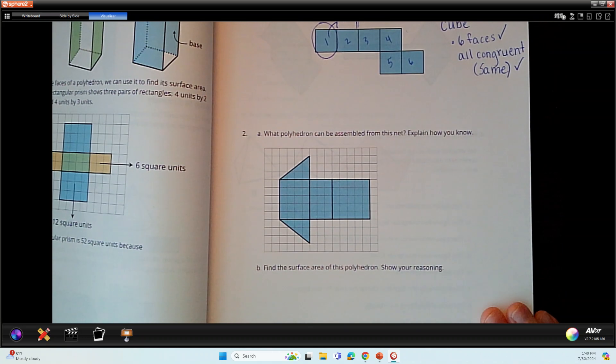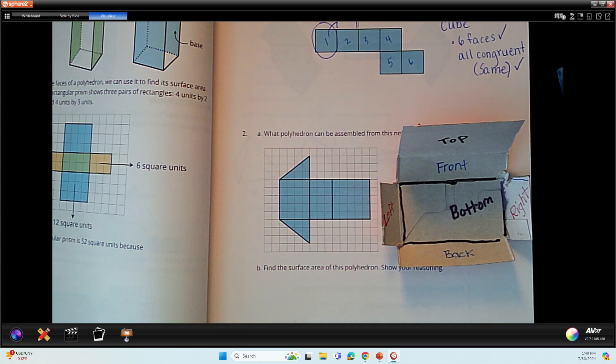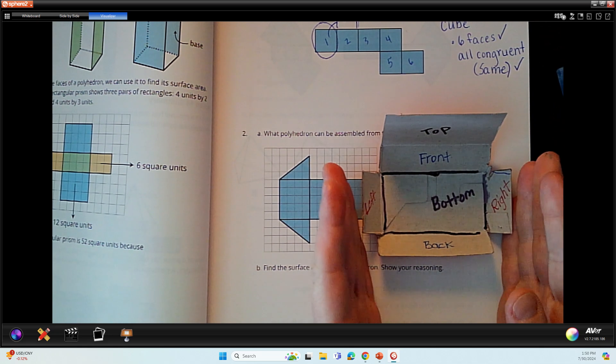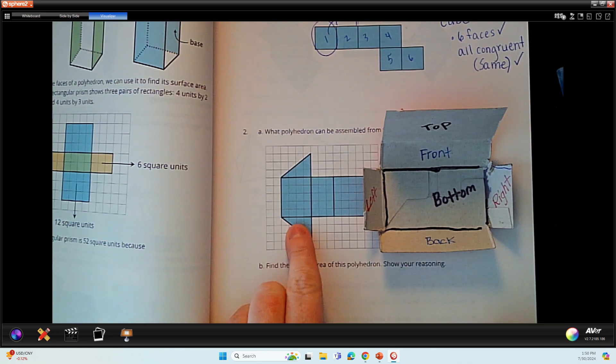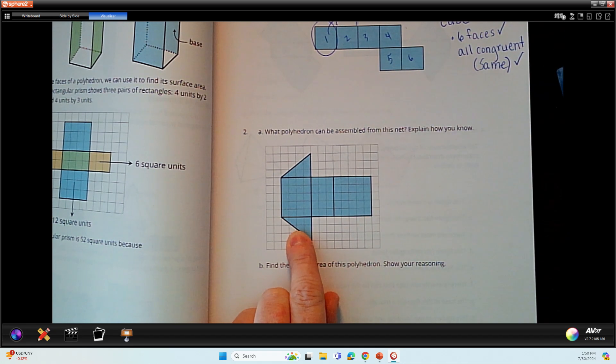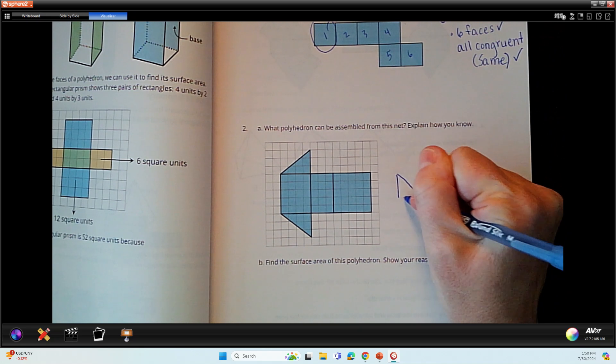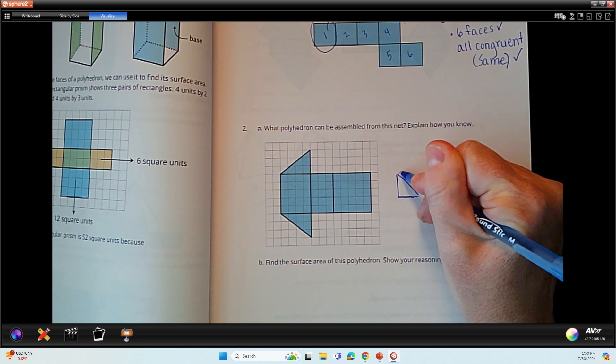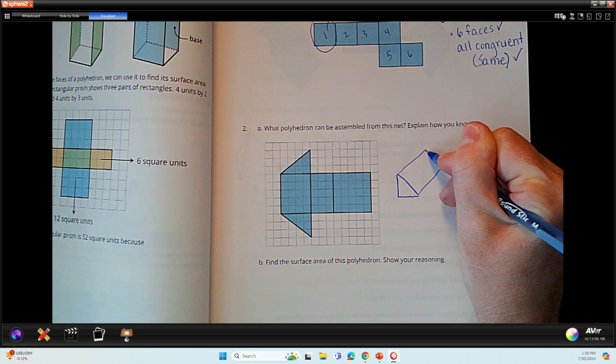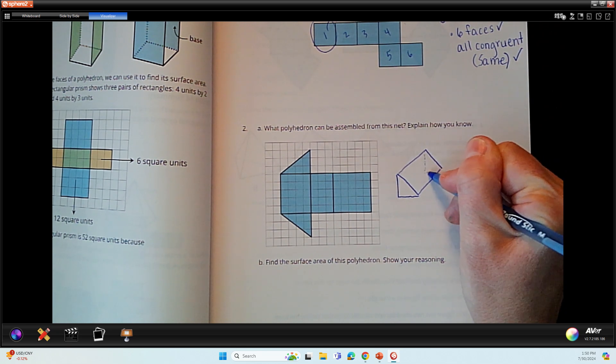Okay, what about this? What polyhedron can be assembled from this net? Okay, well this is very close to my box. The only difference is that the left and the right are not rectangles, they're triangles. So I am guessing that if I folded this up, I would have a kind of like a tent or like a right triangle. So something that would look a little like this. I'm just going to sketch it. See that? Kind of like the cheese wedge. Okay, that's what I think this will fold up to be.